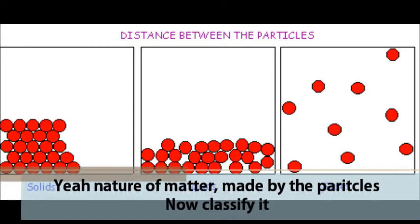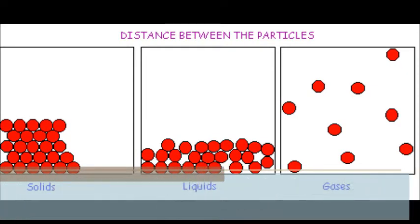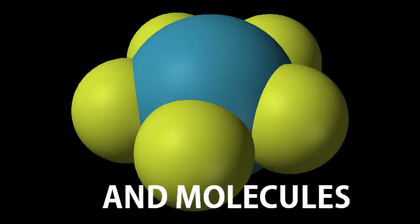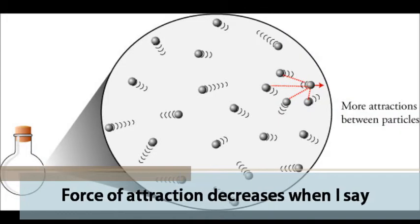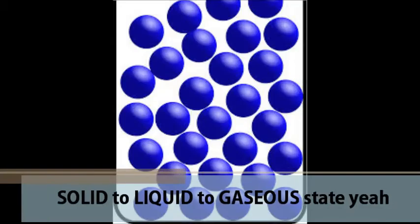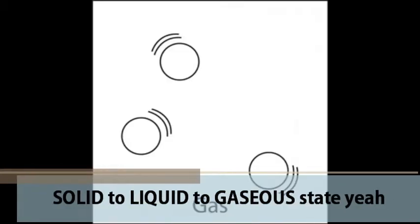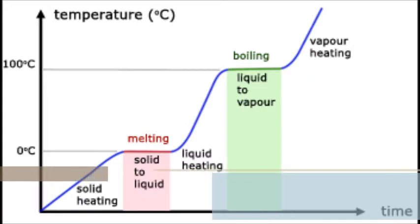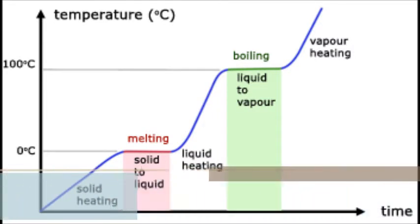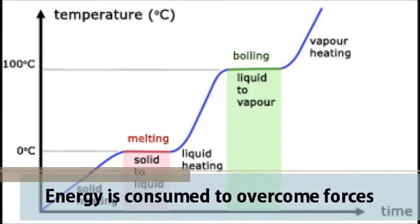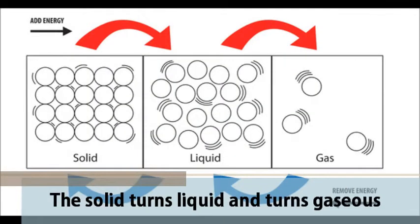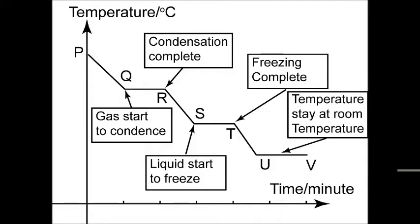Nature of matters, made by the particles. Now classify it: atoms, ions, and molecules. Force of attraction decreases when I say yeah — solid to liquid to gaseous state. Now you read the heating curve: the heat just goes constant. Energy is consumed to overcome forces. The solid turns to liquid and turns gaseous.